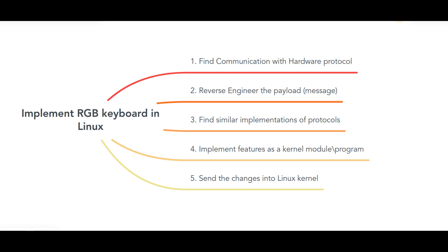And here is what I came up with. 1. Figure out how software communicates with hardware. 2. Reverse engineer the payload or the message that changes the keyboard's color. 3. Find a similar implementation of this protocol in the Linux kernel. 4. Implement the missing feature as a kernel module or a simple program. 5. Merge the feature into the Linux kernel.